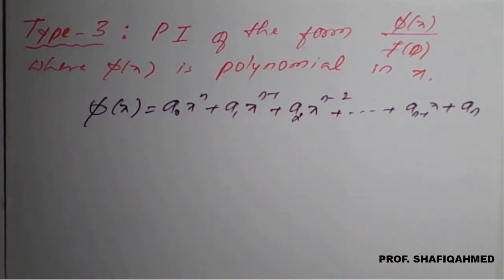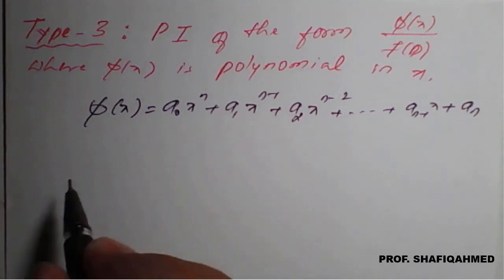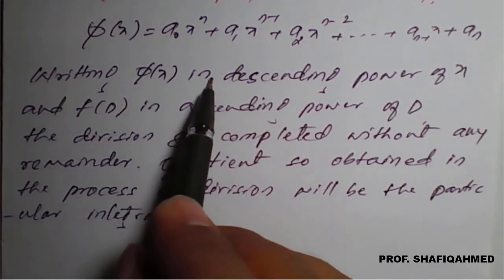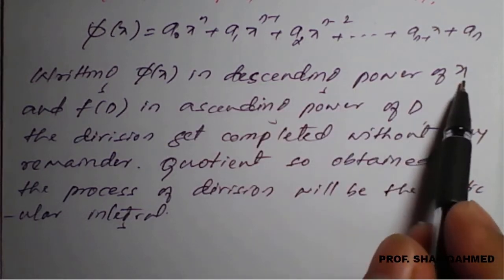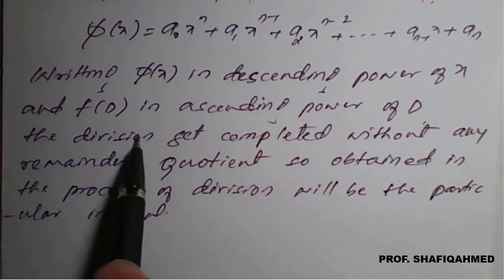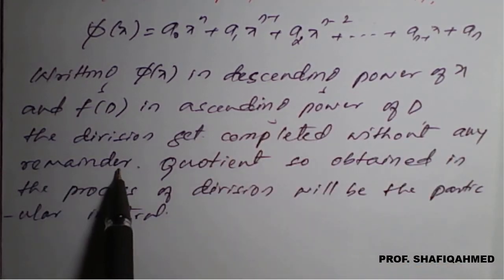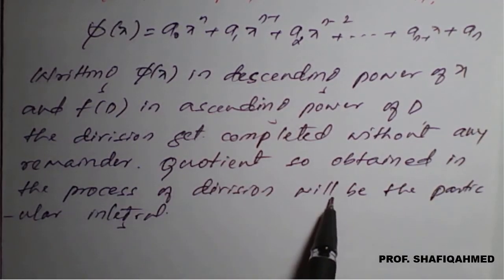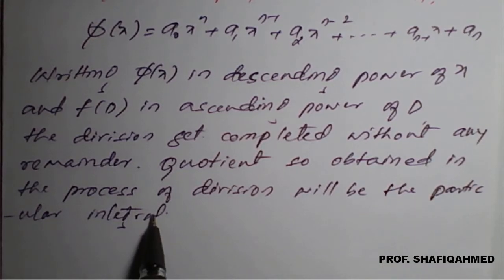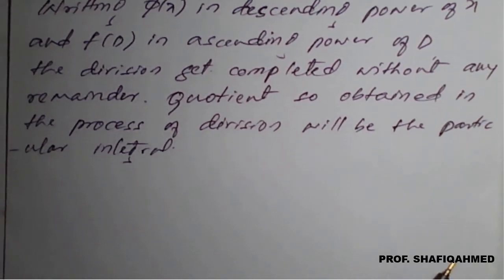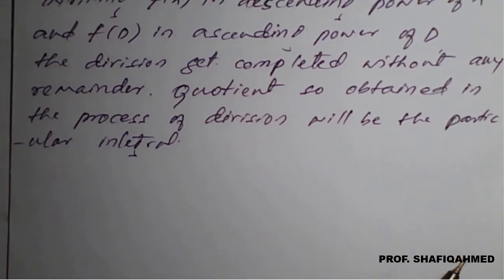That quotient answer is nothing but the particular integral. Writing φ(x) in descending power of x and f(D) in ascending power of D, the division gets completed without any remainder. The quotient so obtained in the process of division will be the particular integral — just like the simple long division method, polynomial divided by polynomial.